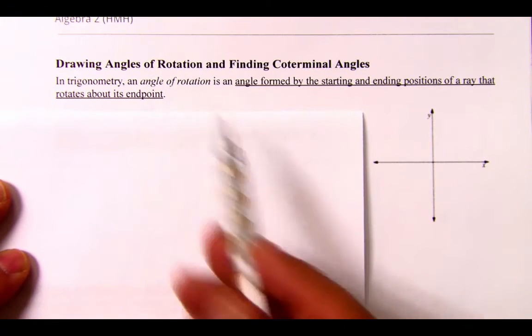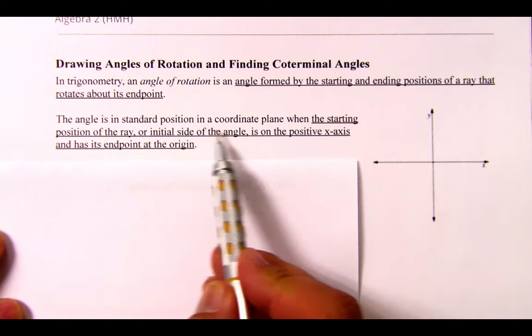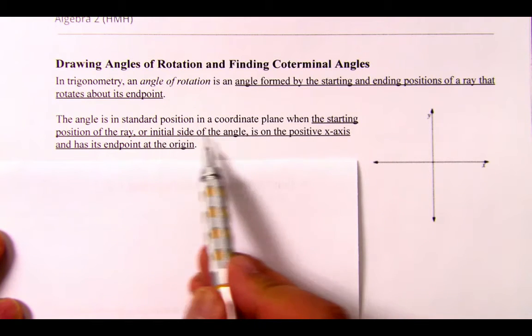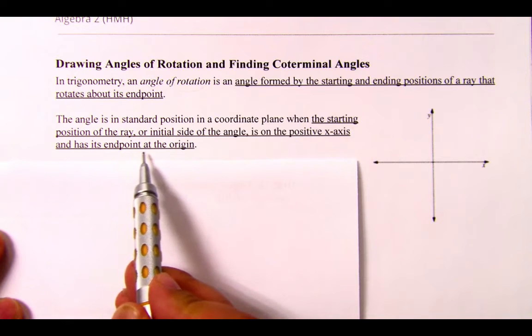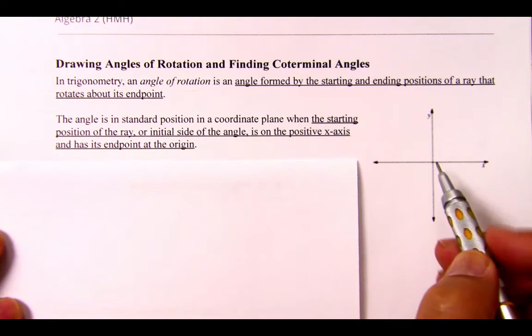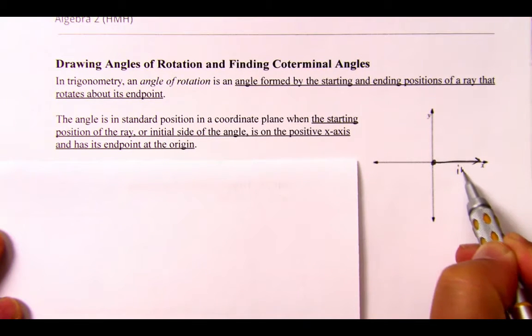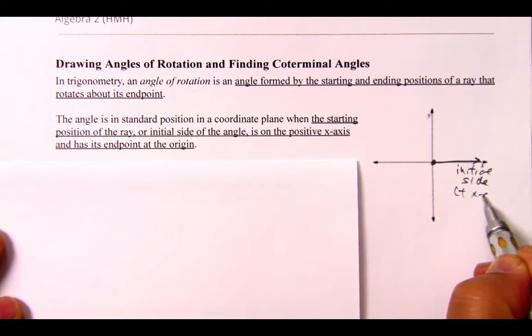An angle in standard position in a coordinate plane occurs when the starting position of the ray, the initial side of the angle, is on the positive x-axis and has its endpoint at the origin. So basically what that means is that our initial side starts here. We call that initial side, and that's on the positive x-axis.